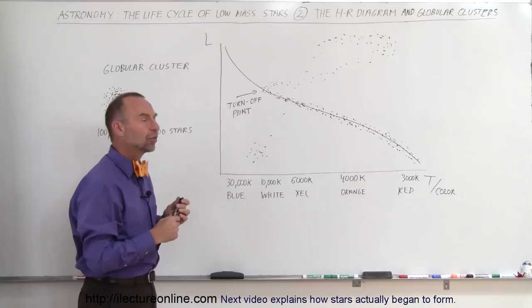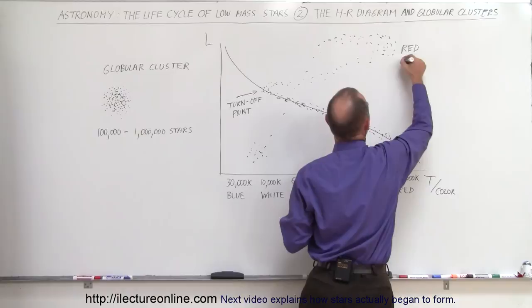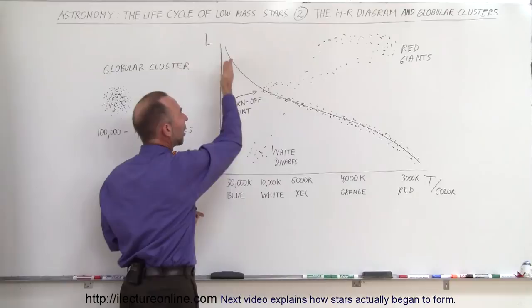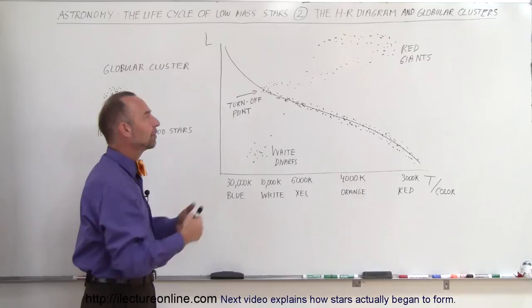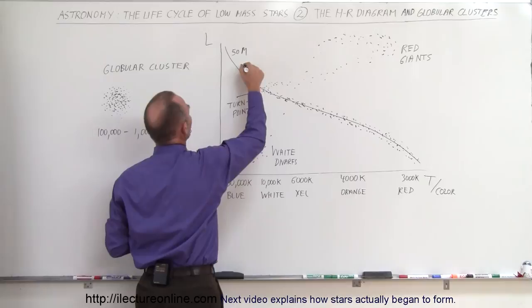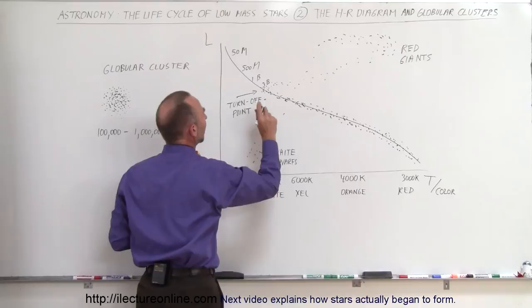The stars over here were known as red giants. The stars down here in the left corner were known as white dwarfs. What we could do with the turn-off point is we could realize how long the star could survive on the main sequence before it would turn itself into a red giant. Any stars up here would only last maybe about 50 million years. Stars over here maybe 500 million years, over here 1 billion years, and here 3 billion years.